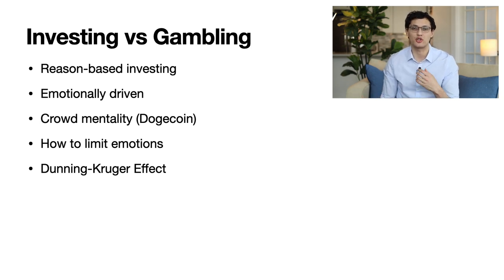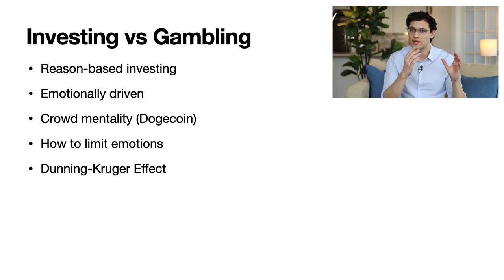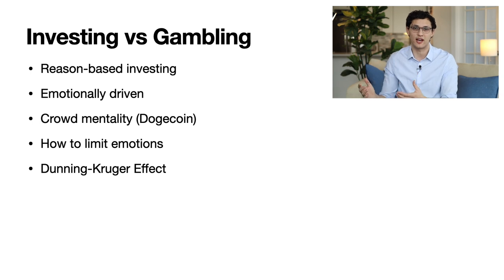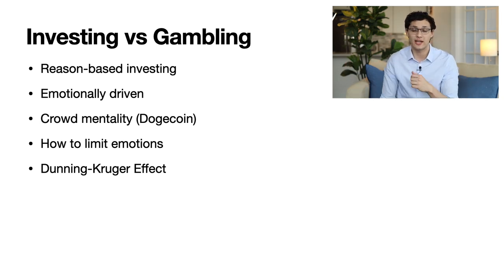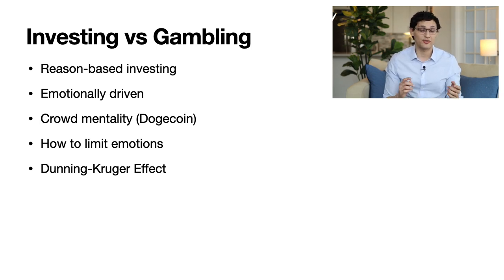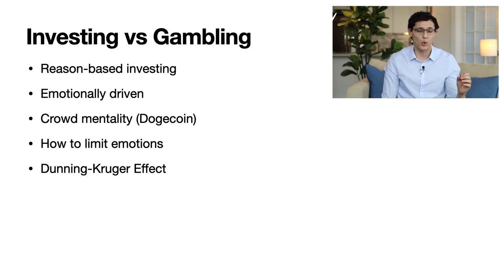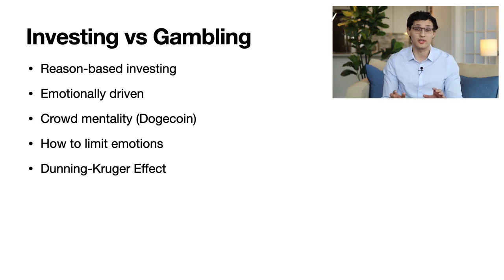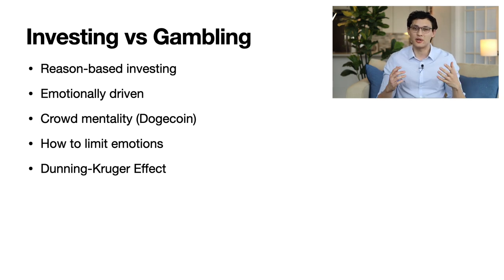Dogecoin is a great example of this — communities will self-reassure each other that a coin is always going to go up in value, and as it goes up, more people buy into it, increasing its momentum. If you're involved in one of these communities, it's really easy to get caught up in the hype. A couple of ways to identify if this is happening: if you're in a community that silences dissent and claims any criticism is FUD, or anytime they create rallying cries like 'to the moon' — that is a red flag, and you want to be cautious because they may be driven entirely by emotion and not reason.